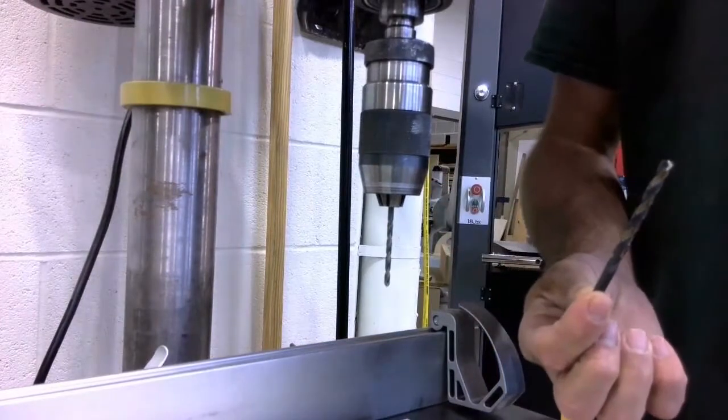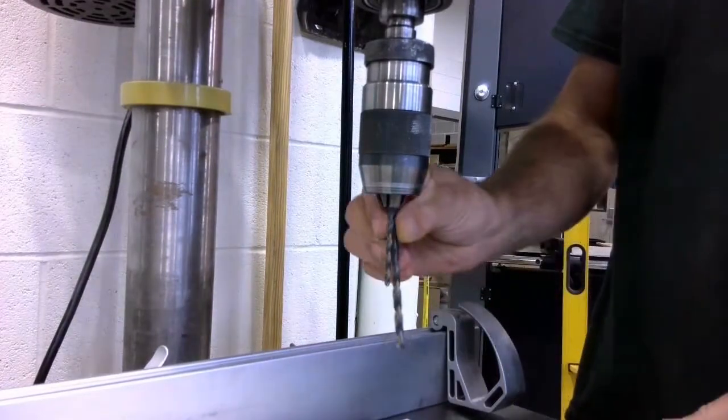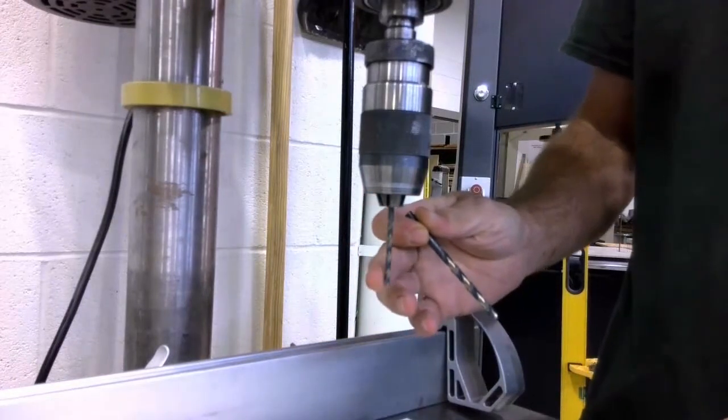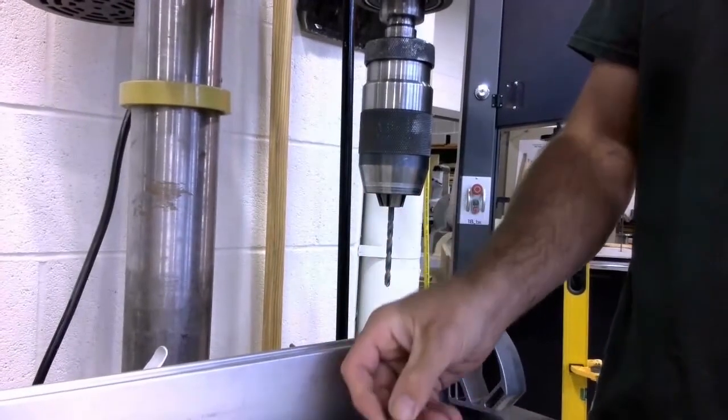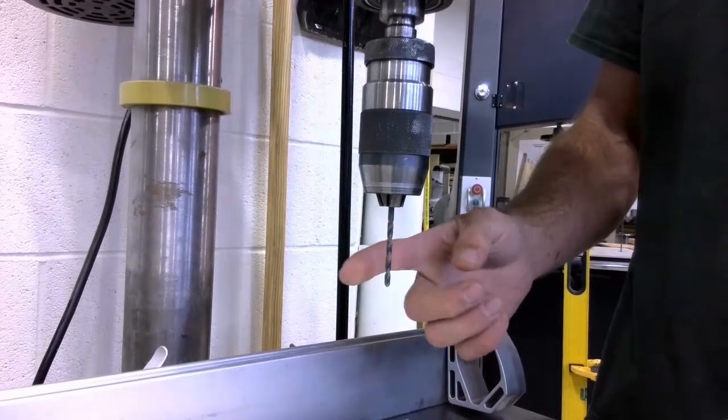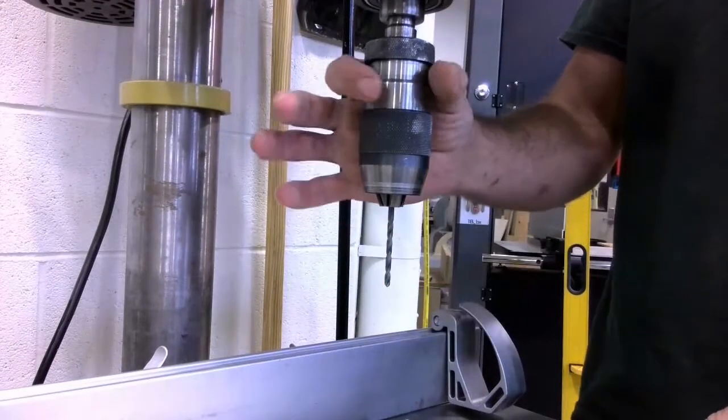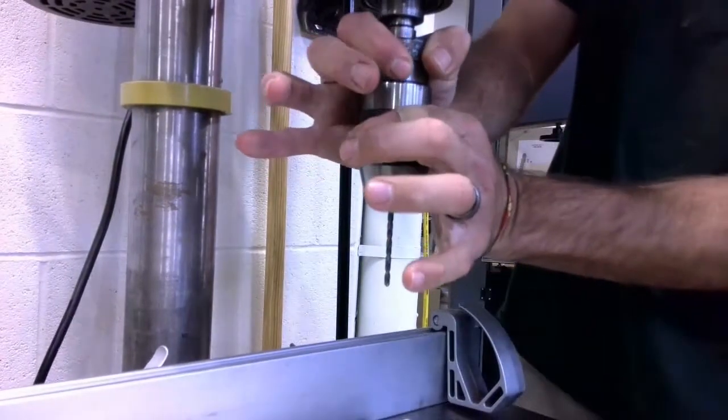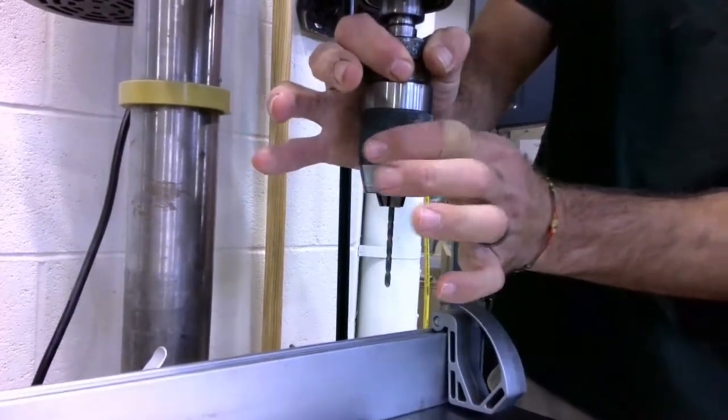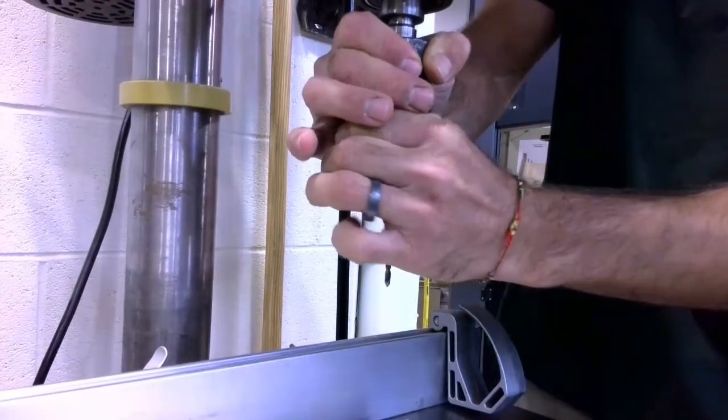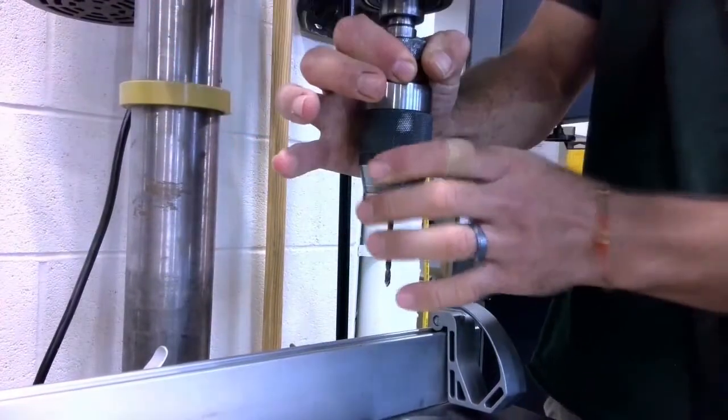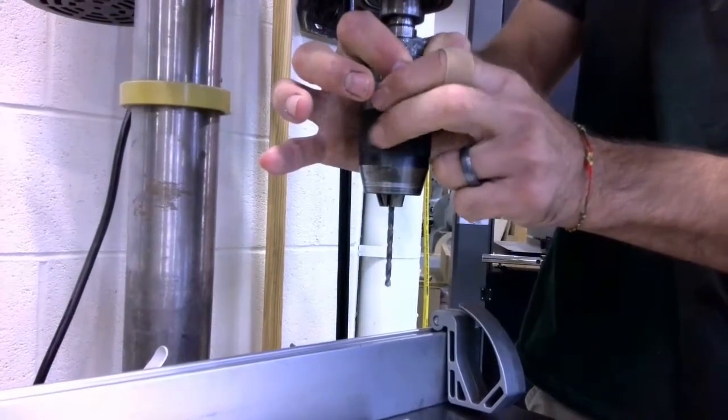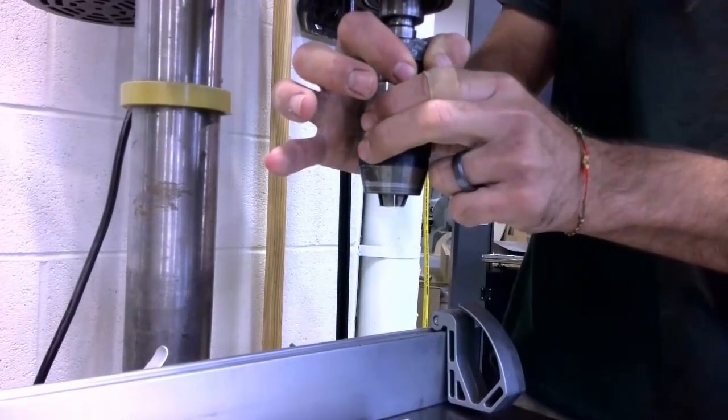So here is my quarter inch drill bit, and you can see it's a larger diameter than the bit that's currently mounted in the machine. So I need to remove this drill bit. To remove this, I'm simply going to grab this black upper ring and this black lower ring, and I'm going to spin the lower ring to my left. And when I do that, I'm opening up the jaws, and this is going to drop that drill bit out.